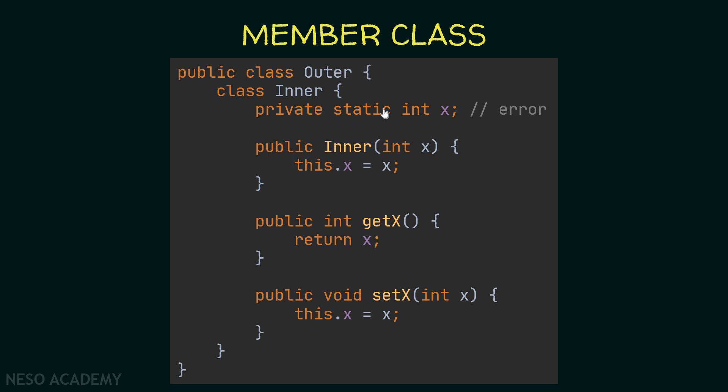There is one exception: a member class can contain final static variables. This is the only case — if you omit the final keyword, it won't work. Remember, the final keyword is used to declare constants in Java.